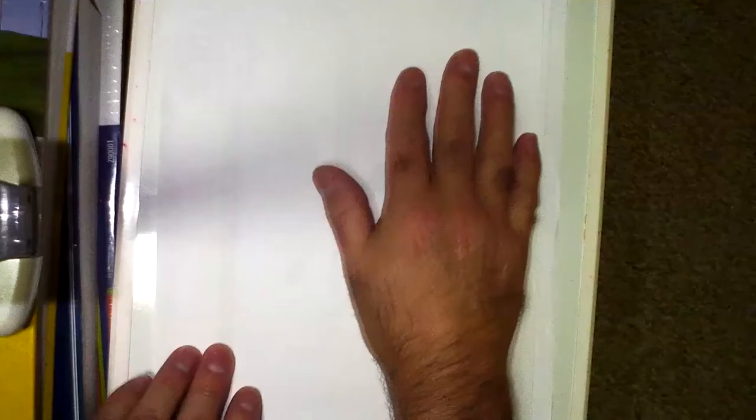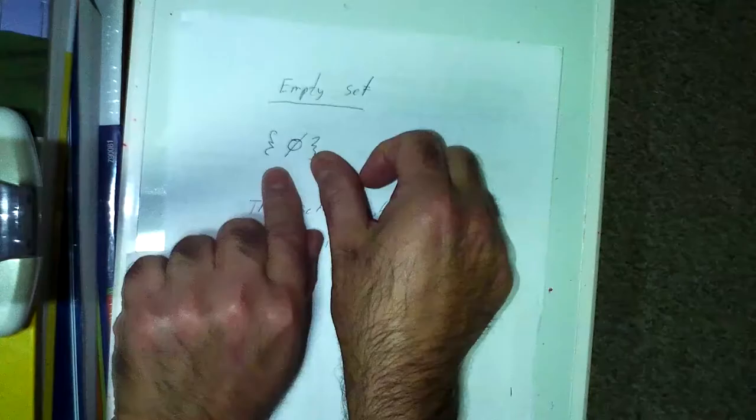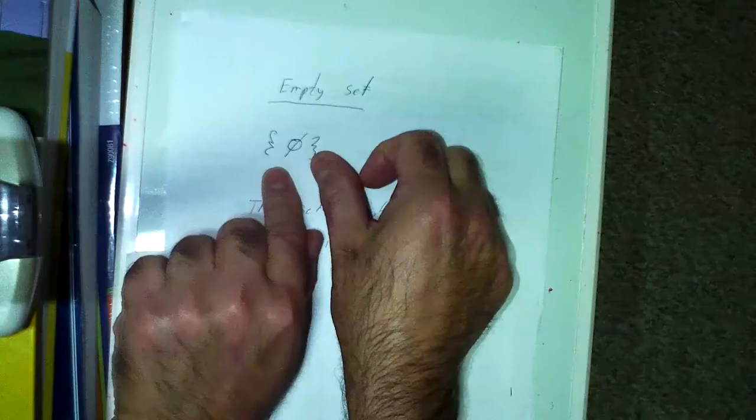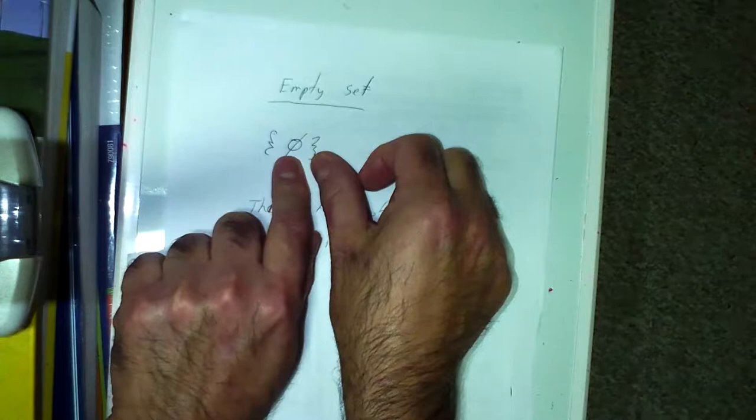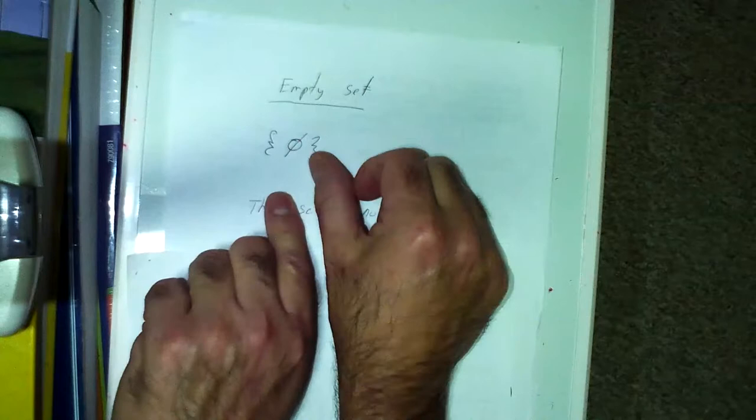One symbol you need to be aware of is the empty set. The empty set looks like braces with a zero with a line through it — it means there's nothing inside. However, the set containing the empty set — braces around that symbol — is not empty. It contains one element, which is the empty set itself. That set has something inside it — the empty set — so it has one element.